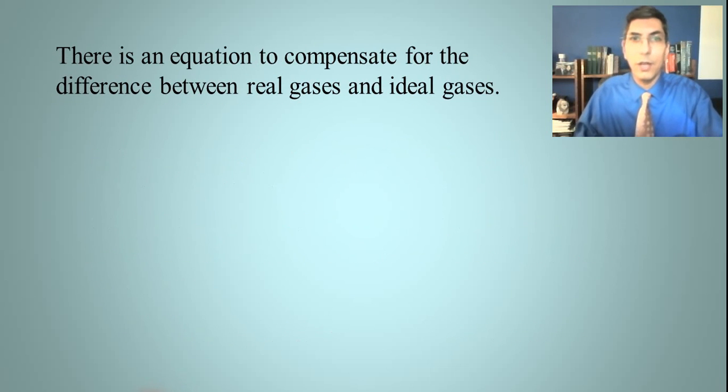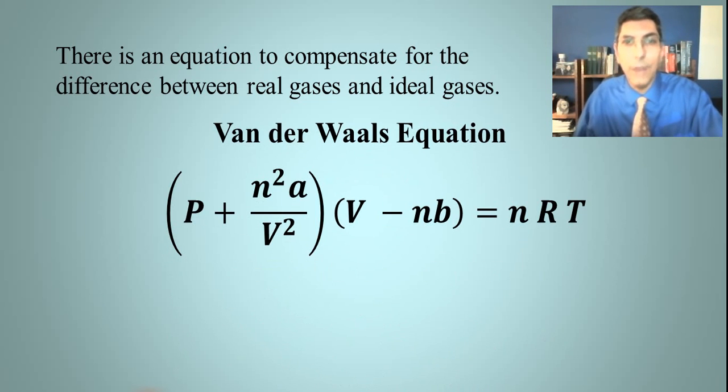Now there is an equation that helps us to compensate for the differences between real gases in the real world and ideal gases on paper. And that's called the Van der Waals equation. And this is what it looks like. And it looks fairly complex. And on the AP chemistry exam, you'll never be asked to actually calculate these things. But it is nice to know that you can use this equation.